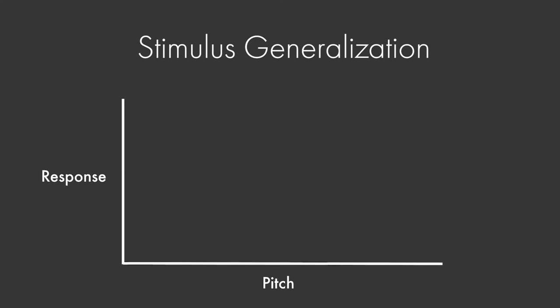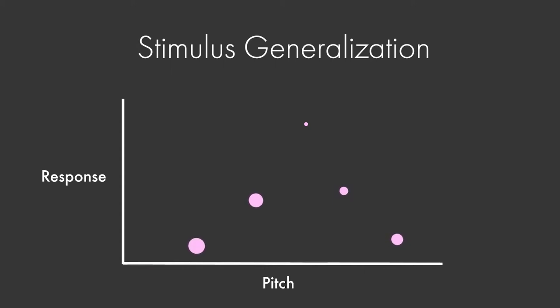Here's an example. A dog might be conditioned to respond to a bell with a particular pitch. When later tested, the dog will respond most strongly if the test bell has the same pitch, but will also respond — though a bit less strongly — to sounds a few notes higher or lower. In general, the greater the difference between the new stimulus and the original CS, the weaker the conditioned response will be.